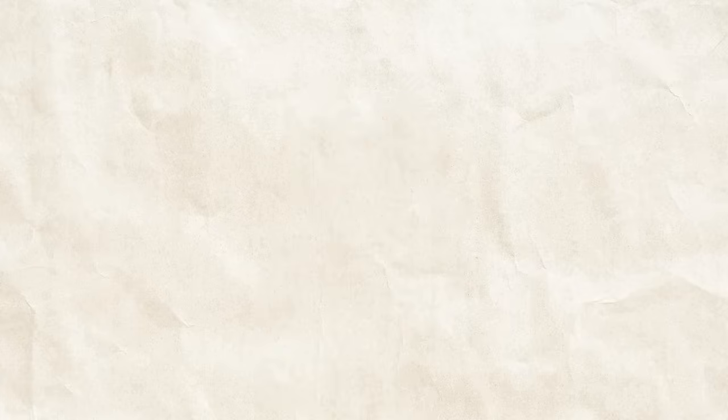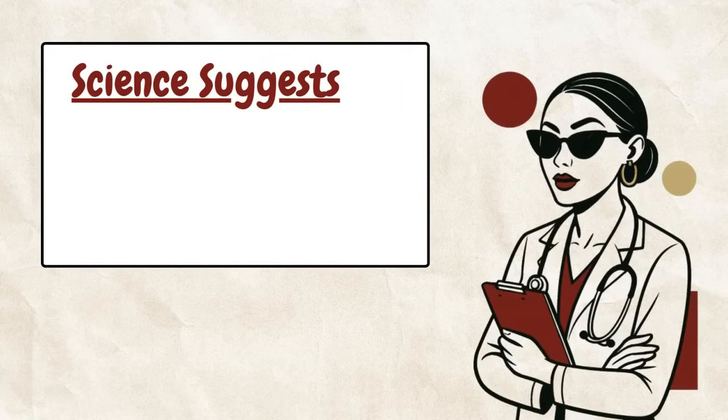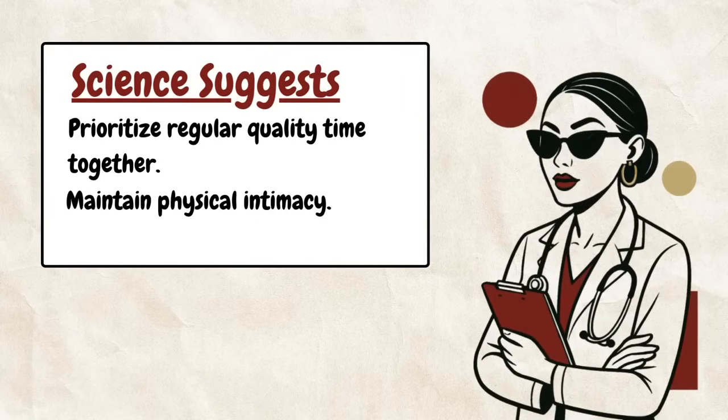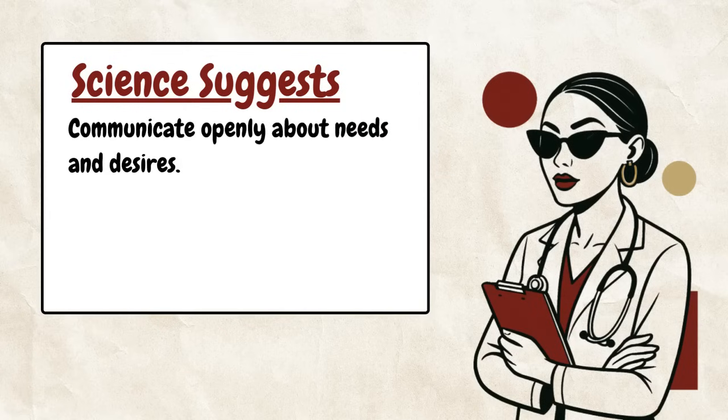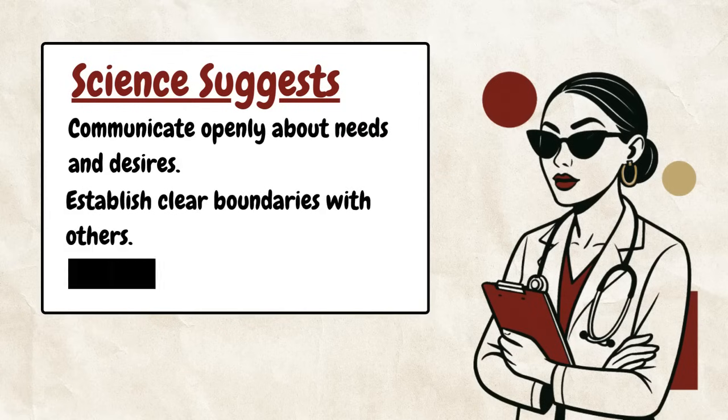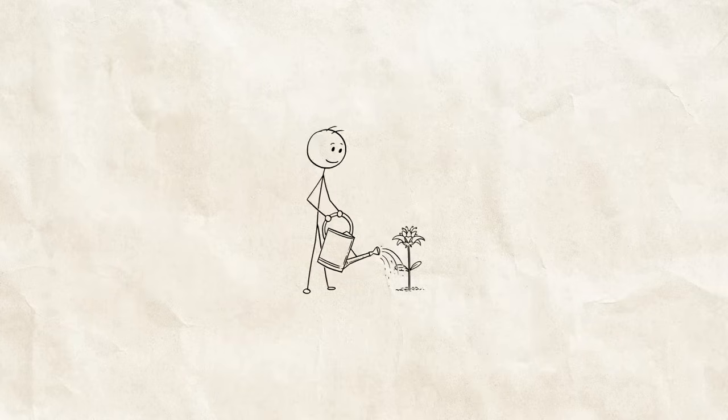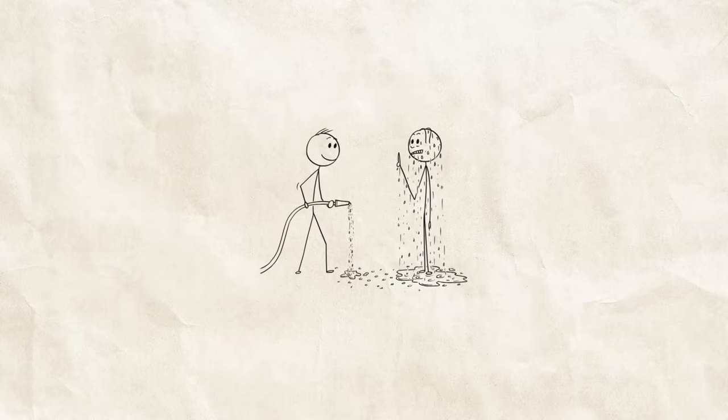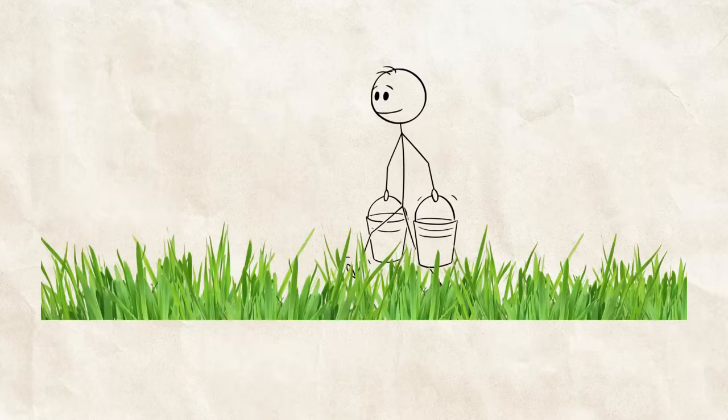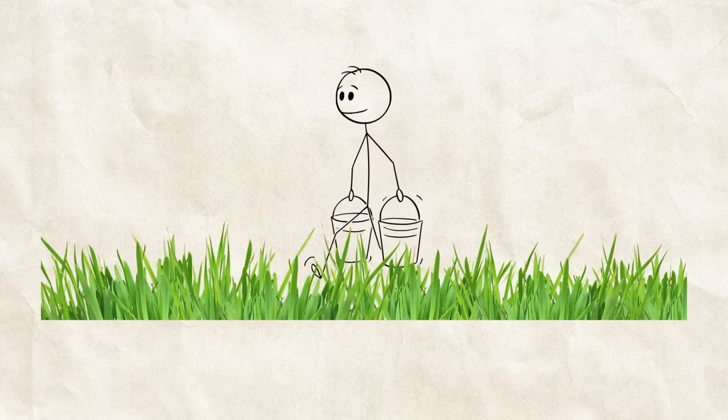If you want to make your relationships affair proof, here's what science suggests. Prioritize regular quality time together. Maintain physical intimacy, not just sex. Communicate openly about needs and desires. Establish clear boundaries with others and build trust through transparency. Basically, water your own fucking lawn so your partner isn't tempted to play in someone else's grass. I promise you the grass isn't greener on the other side. It's greener where you water it.